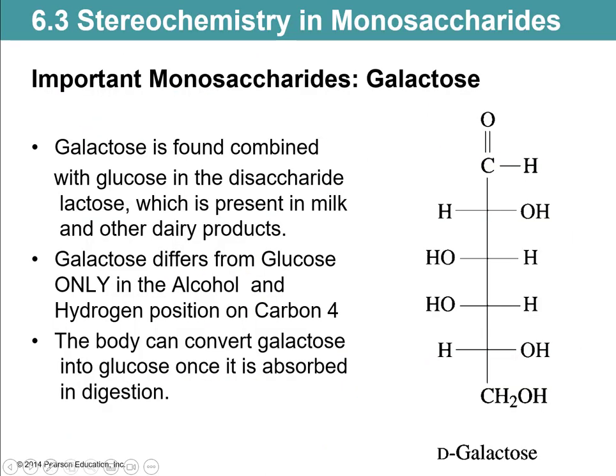So the next one, past glucose, is galactose. You probably remember we've talked about lactose intolerance. We talked about how enzymes are important in breaking up even simple disaccharides. Galactose is one of the components found in lactose, which you can kind of see from the name. So that's a good clue to remember that it's part of milk sugar.